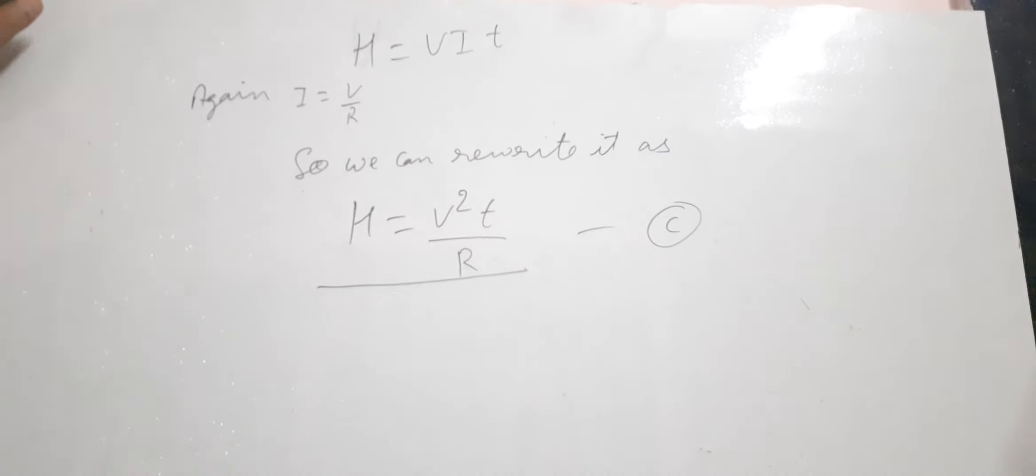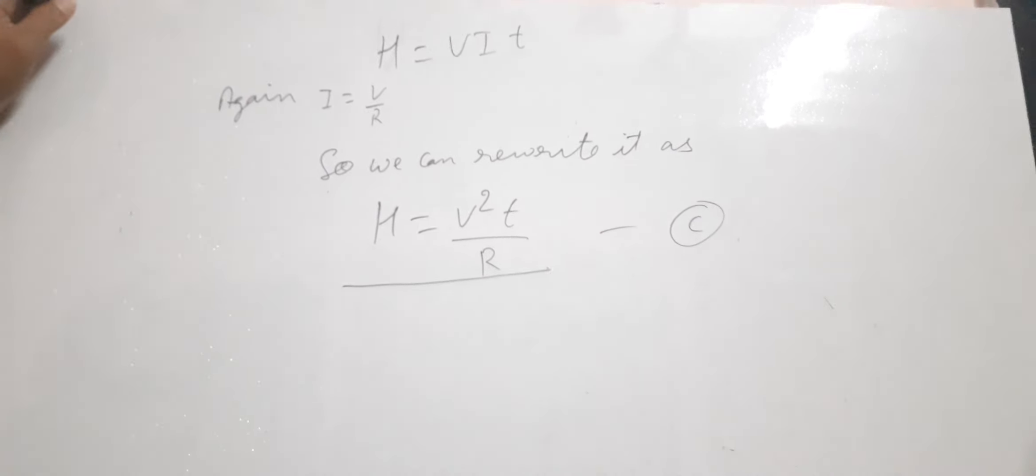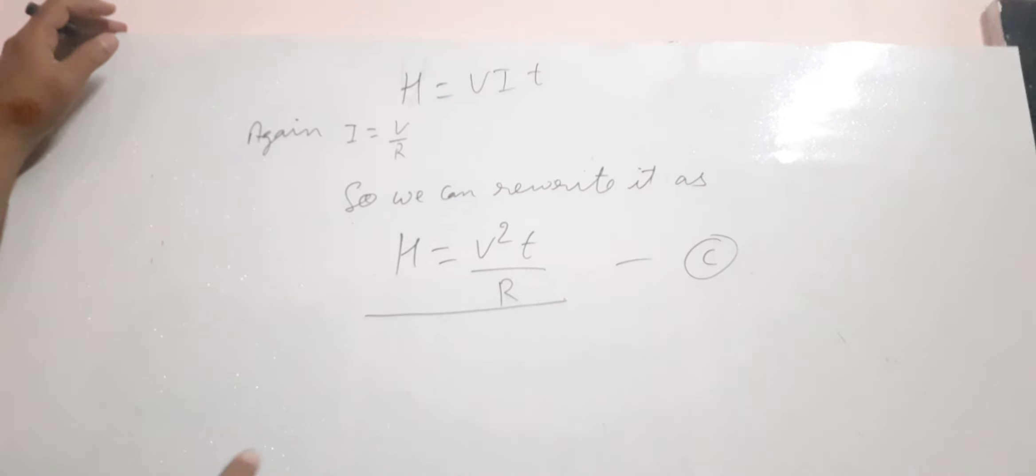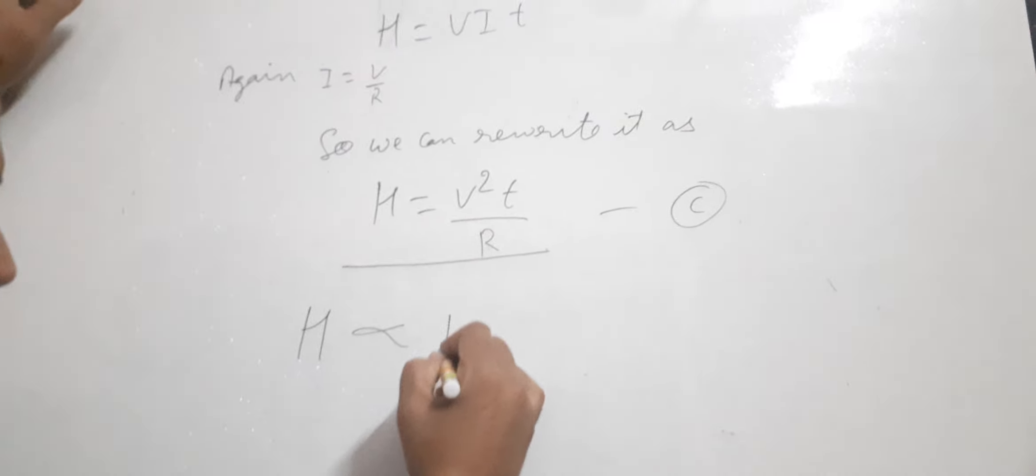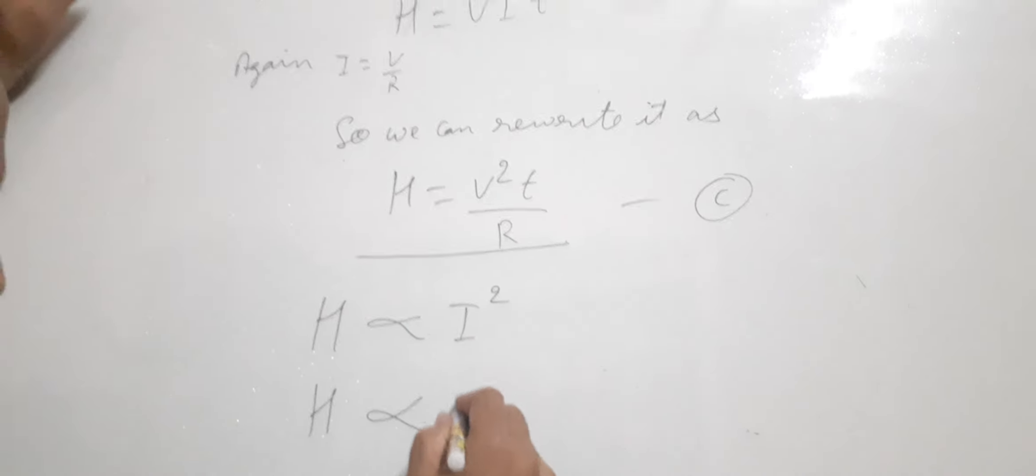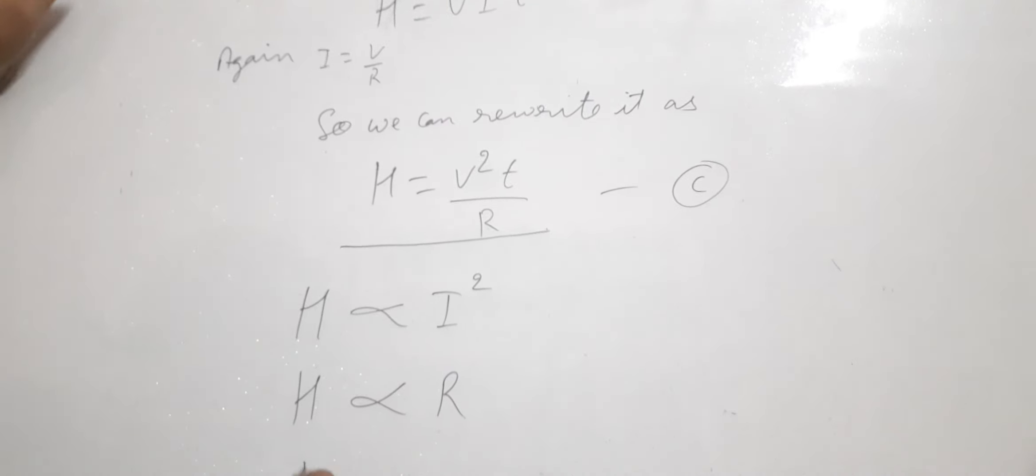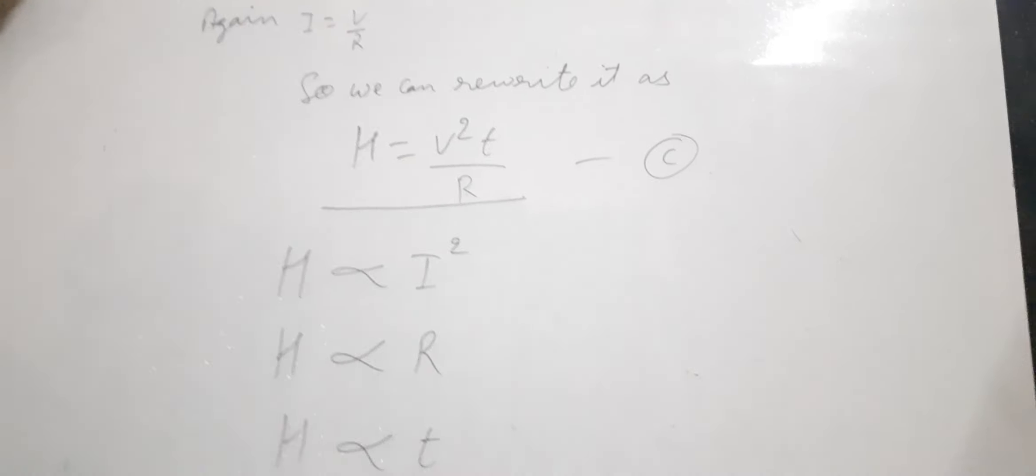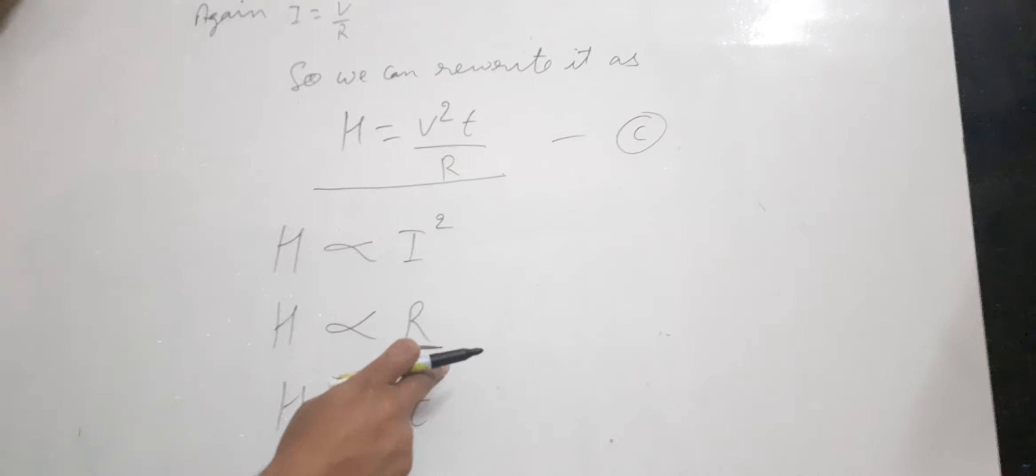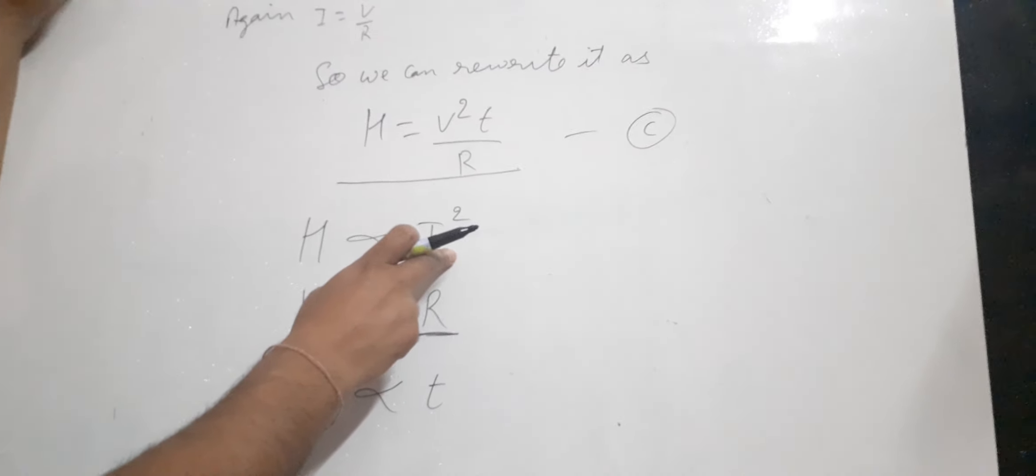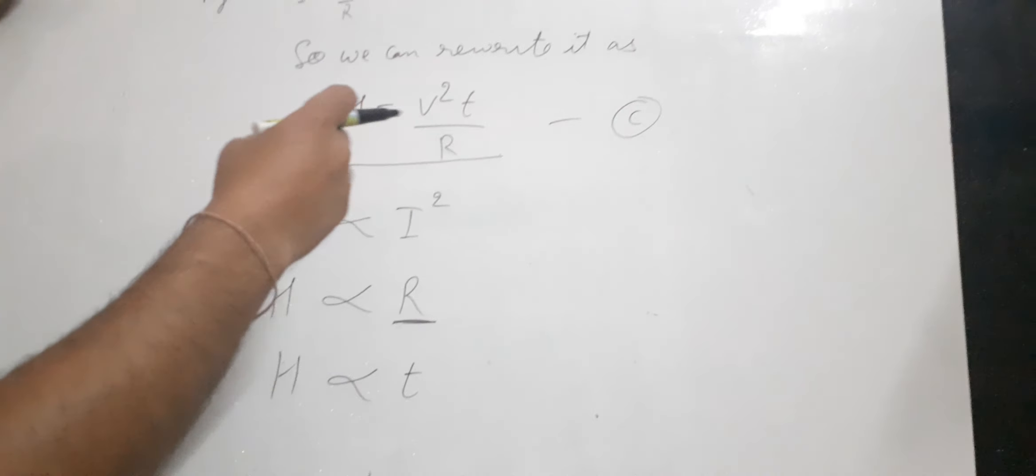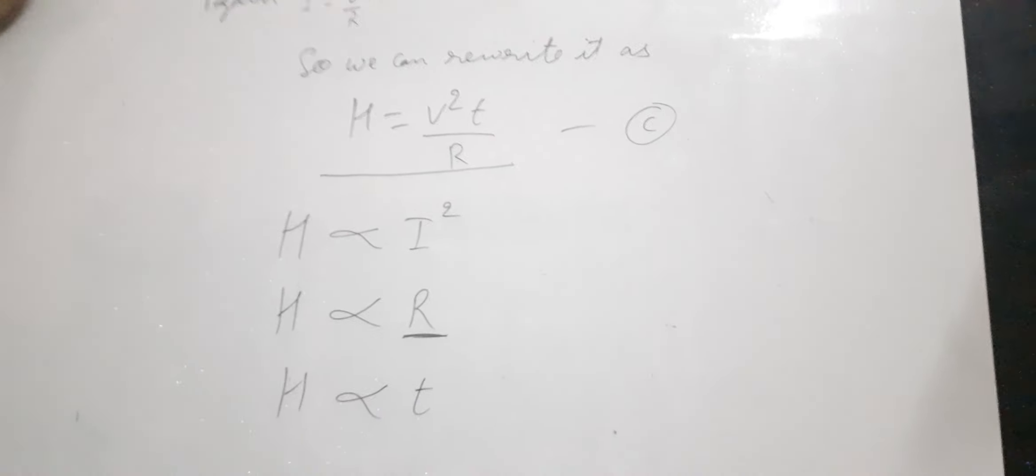These are the various formulas by which we can calculate the amount of heat produced when current is passed through any conductor. The main thing to notice is that heat produced is directly proportional to the square of current, directly proportional to resistance, and directly proportional to time. So if you increase the resistance, more heat will be produced. If you increase the current, heat will increase by the square of that variable.